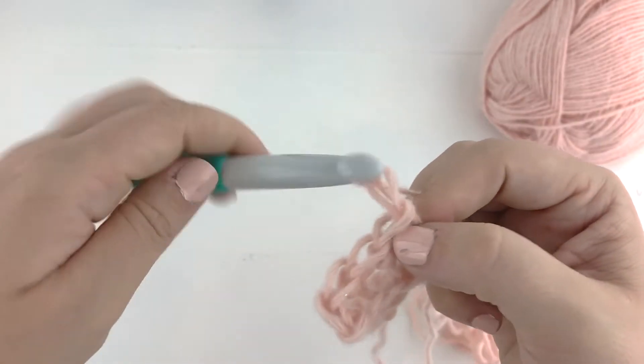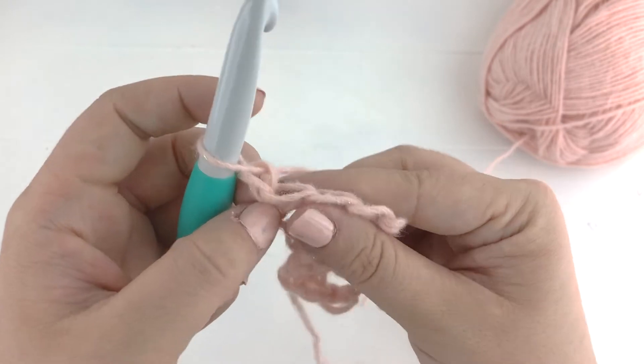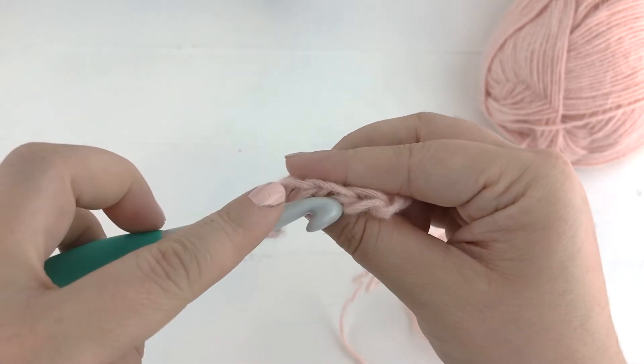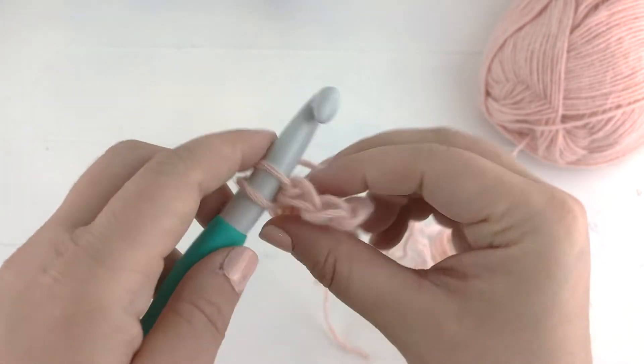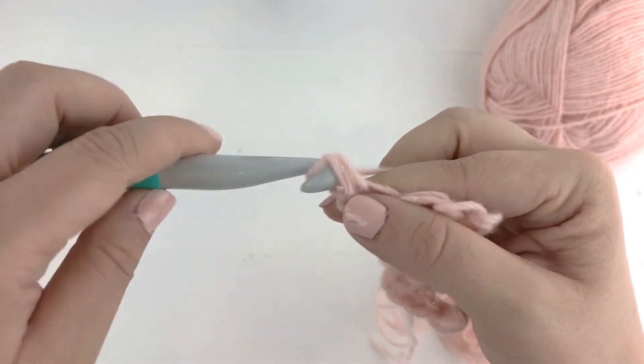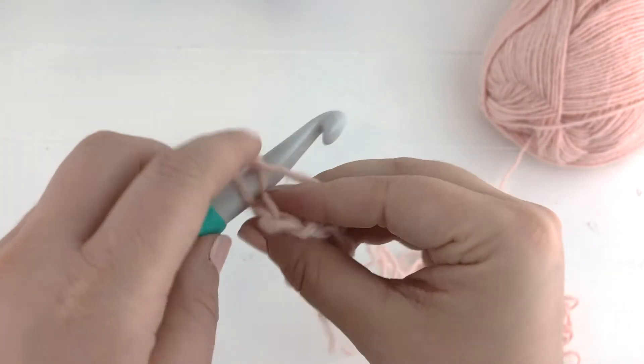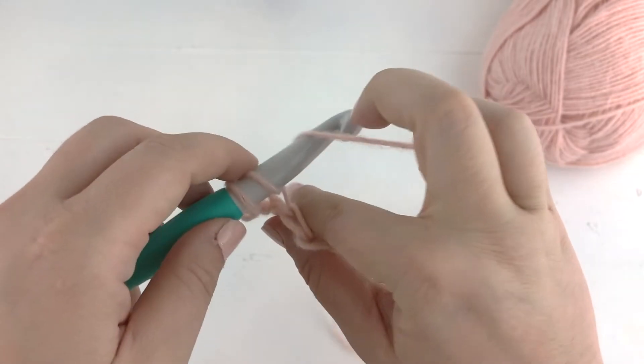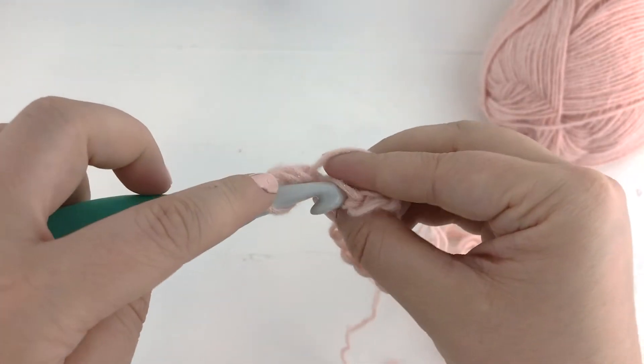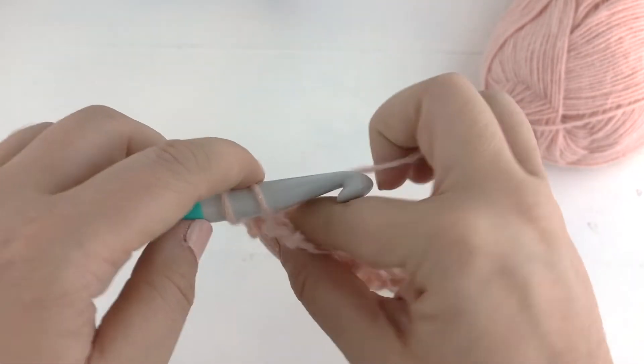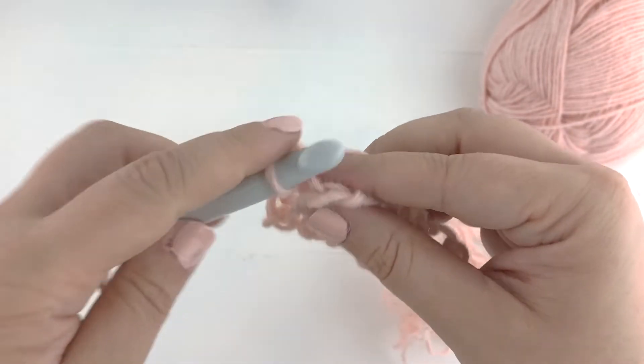Chain one and turn. And for row six and all your even rows you will simply work a single crochet in every stitch across, again in the back loops only. And we will continue those repeats all the way across, but every other row you will increase by one stitch.